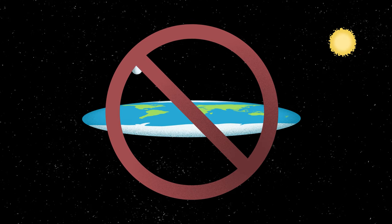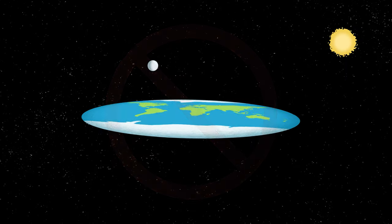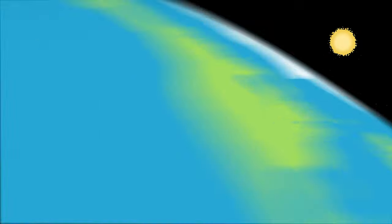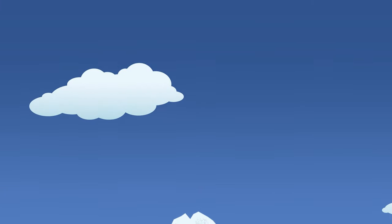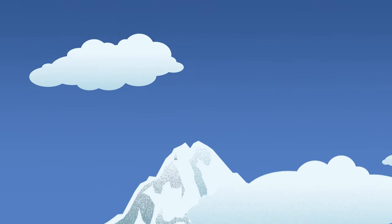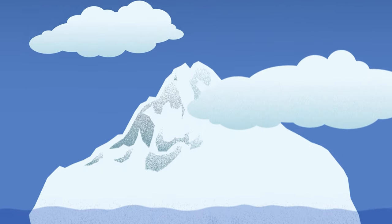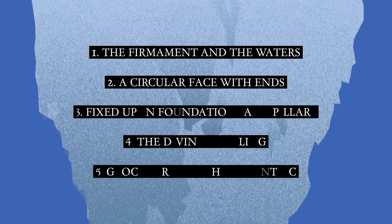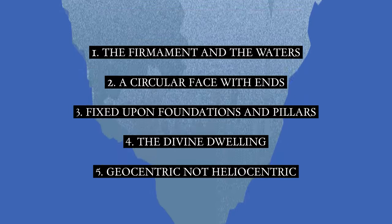Such a conception is circulated by misinformation agents as a way to ridicule and discourage investigation of the subject. When it comes to how vastly different biblical cosmology is to the spinning space ball, an absence of curvature is just the tip of the iceberg. Here are five key aspects of biblical cosmology.